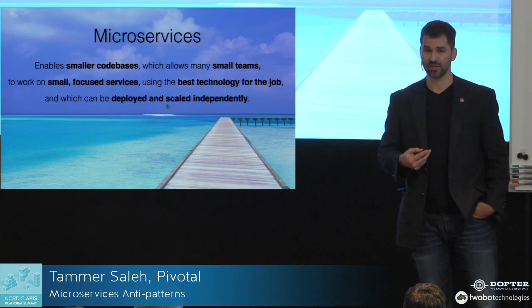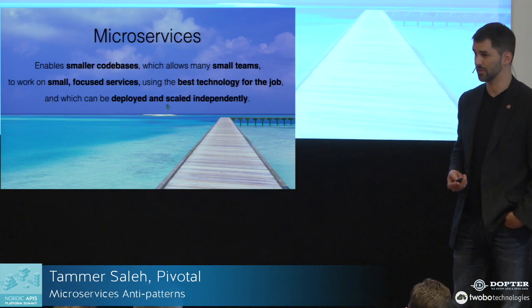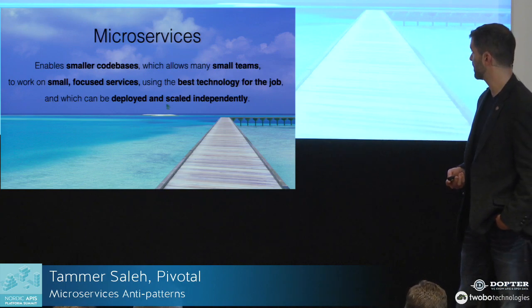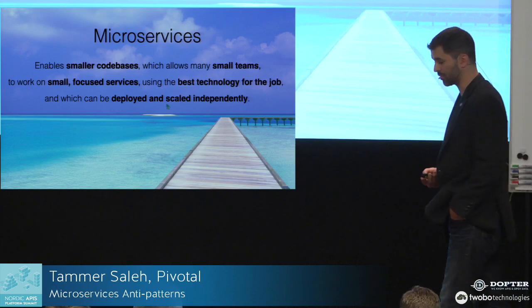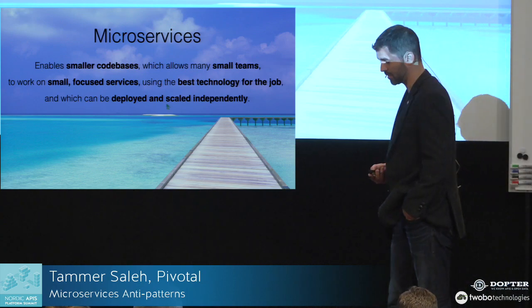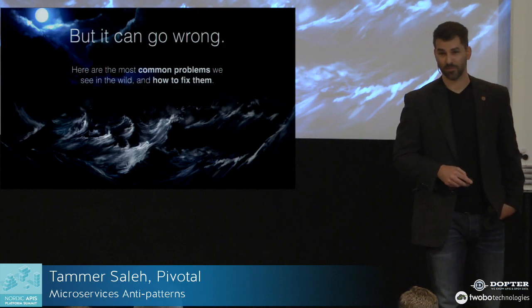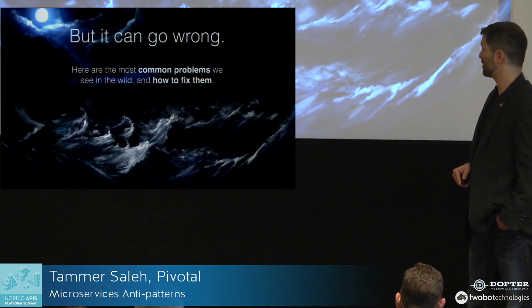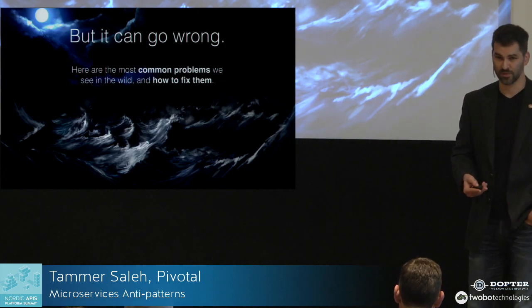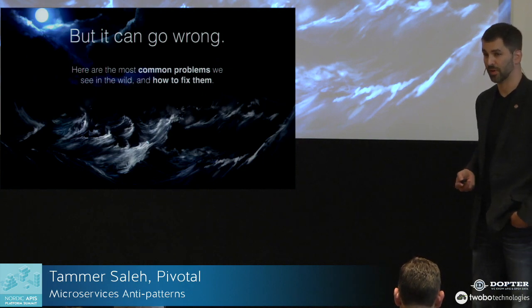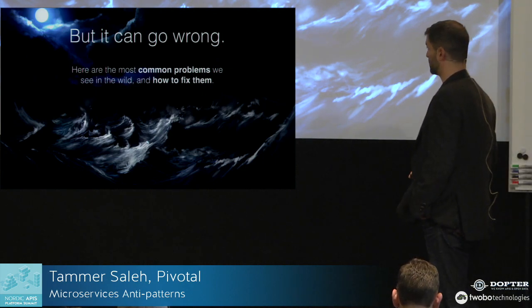Teams can use the best technology for the job, which is important — it gives freedom to each team. And services can be deployed and scaled independently. From an operations point of view, that can be good and bad. There are some really terrible patterns that we've seen when teams build microservices, and now we're going to talk about some of these that we see in the wild.